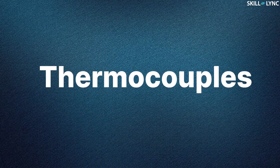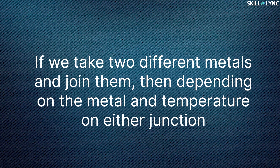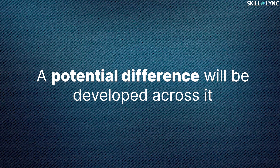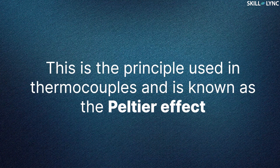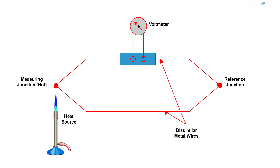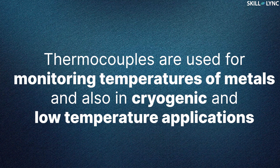Next, we will learn about thermocouples. If we take two different metals and join them, then depending on the metal and the temperature on either junction, a potential difference will be developed across it. This is the principle used in thermocouples and is known as the Peltier effect. The junction of the two metal ends are placed at different temperatures. When a measuring junction is heated, there is an EMF produced in the circuit which is seen on the voltmeter. This changed voltage helps us to determine the temperature. Thermocouples are used for monitoring temperatures of metals and also in cryogenic and low-temperature applications.